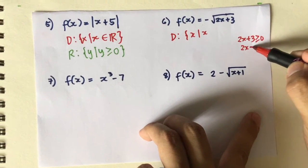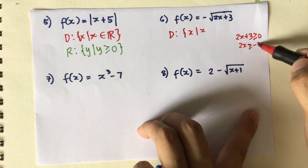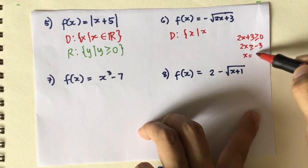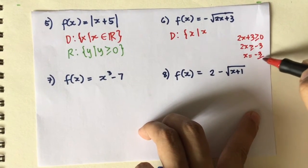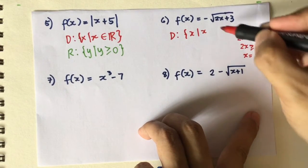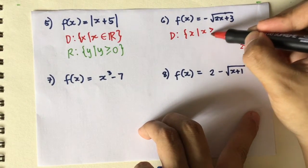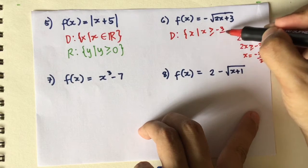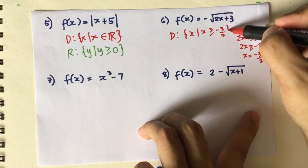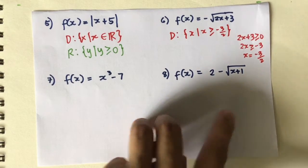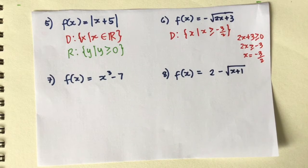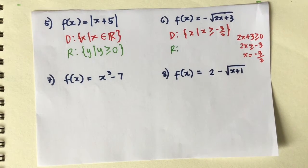Solving for x: 2x + 3 ≥ 0 gives us 2x ≥ -3, and x ≥ -3/2, which is negative 1.5. So our x should only be greater than or equal to negative 3 halves.